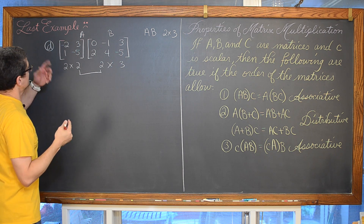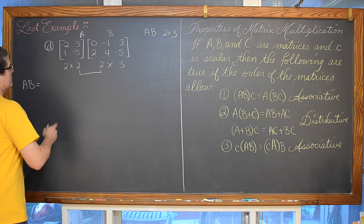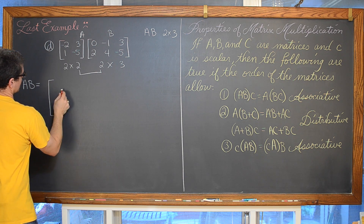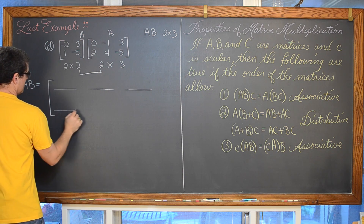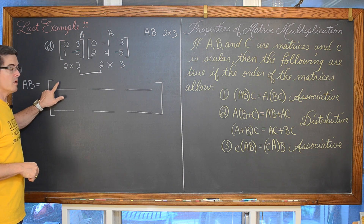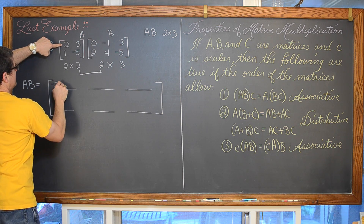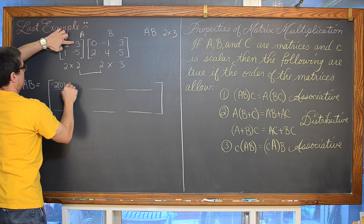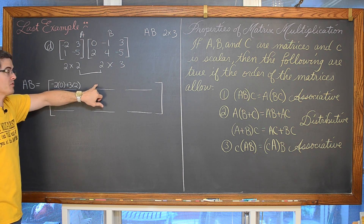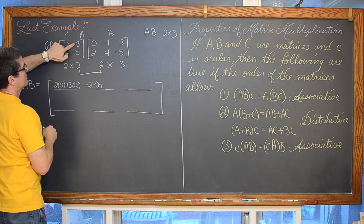Each row of matrix A gets matched up with each corresponding column of matrix B. For the element in row 1, column 1: negative 2 times 0 plus 3 times 2. For row 1, column 2: negative 2 times negative 1 plus 3 times 4. For row 1, column 3: negative 2 times 3 plus 3 times negative 5.